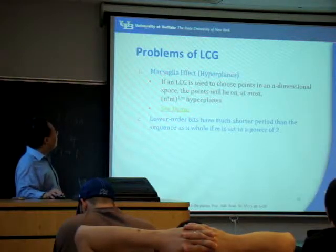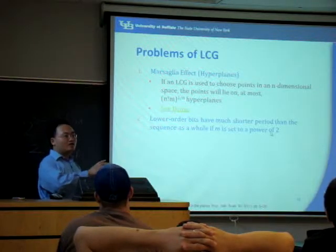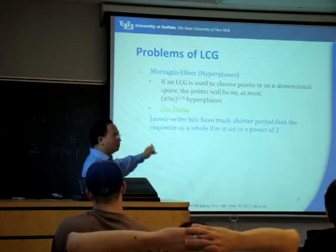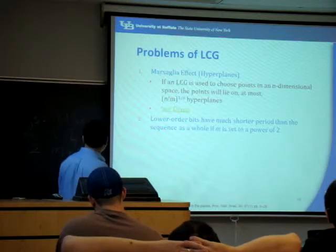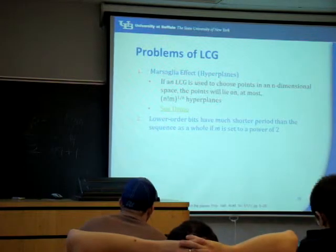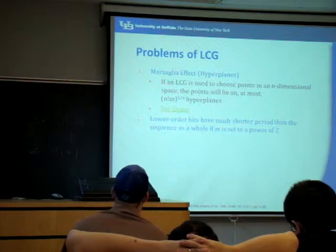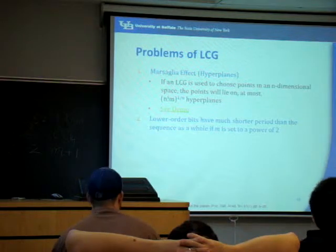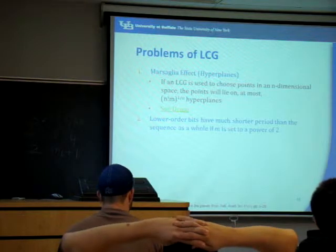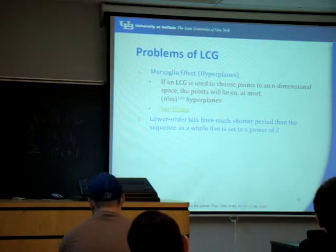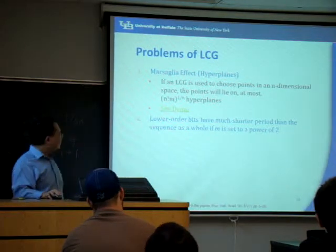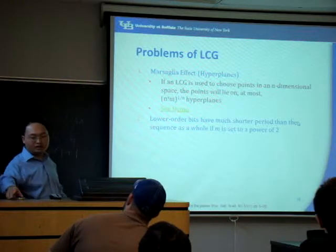Another big problem: although the period of LCG can be very long, the lower order bits have a much shorter period. For example, in a binary number like 1010, the high order bit is on the left and the low order bit is on the right — the rightmost bit has the lowest order. So digits to the right are repeating themselves very quickly. These are the two main problems of LCG.